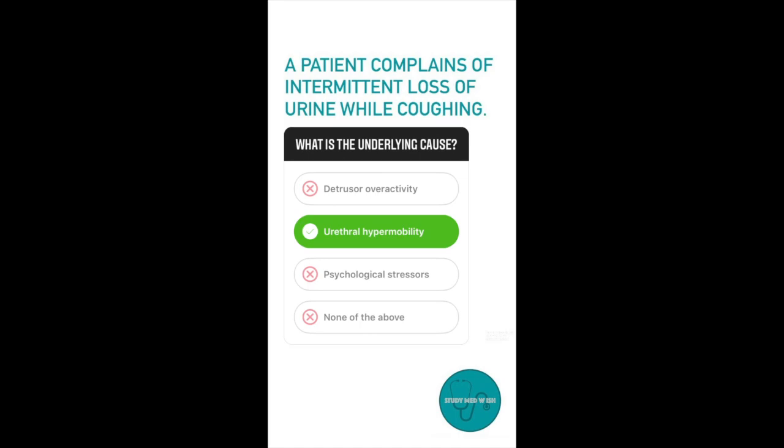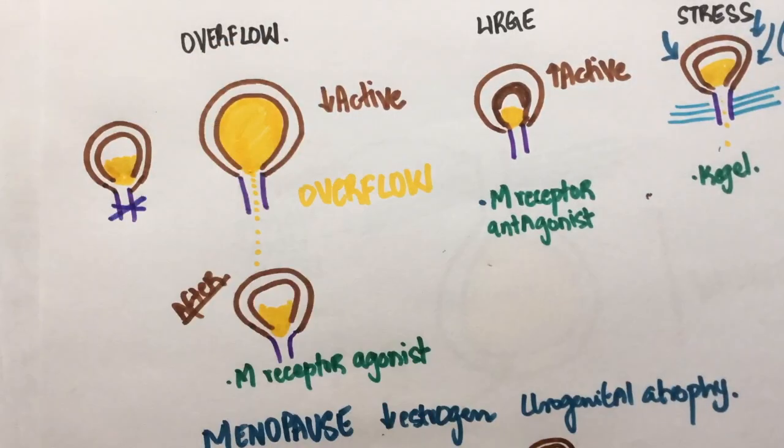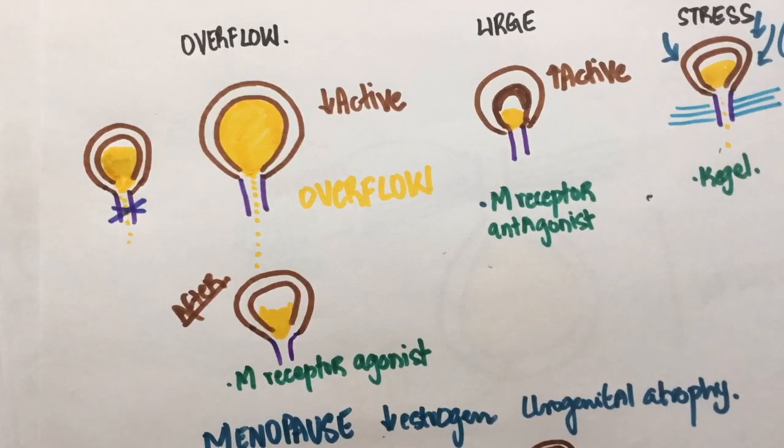Stress incontinence refers to abdominal stress and not psychological. Question number six: An obstruction to the urethra can result in overflow incontinence or urge incontinence. Urethral obstruction leads to overflow incontinence. This is because this part is obstructed so the urine will build up. After exceeding a certain threshold, there will be an overflow.